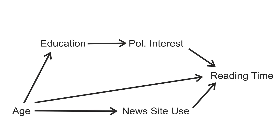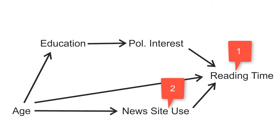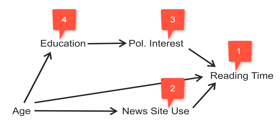From right to left, the first model would have newspaper reading time as the outcome variable, the second one would have news site use as the outcome variable, political interest would be the outcome variable in the third model, and the fourth and final model would have education as the outcome variable. Let's estimate some of these models.